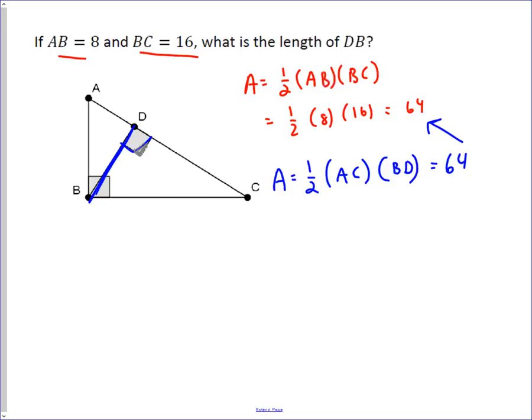So our final step is finding what AC is, and AC can be found because this is eight and this is sixteen. Using the Pythagorean theorem, we can find AC: eight squared plus sixteen squared equals C squared, and so that gives you sixty-four plus 256, which is 320.